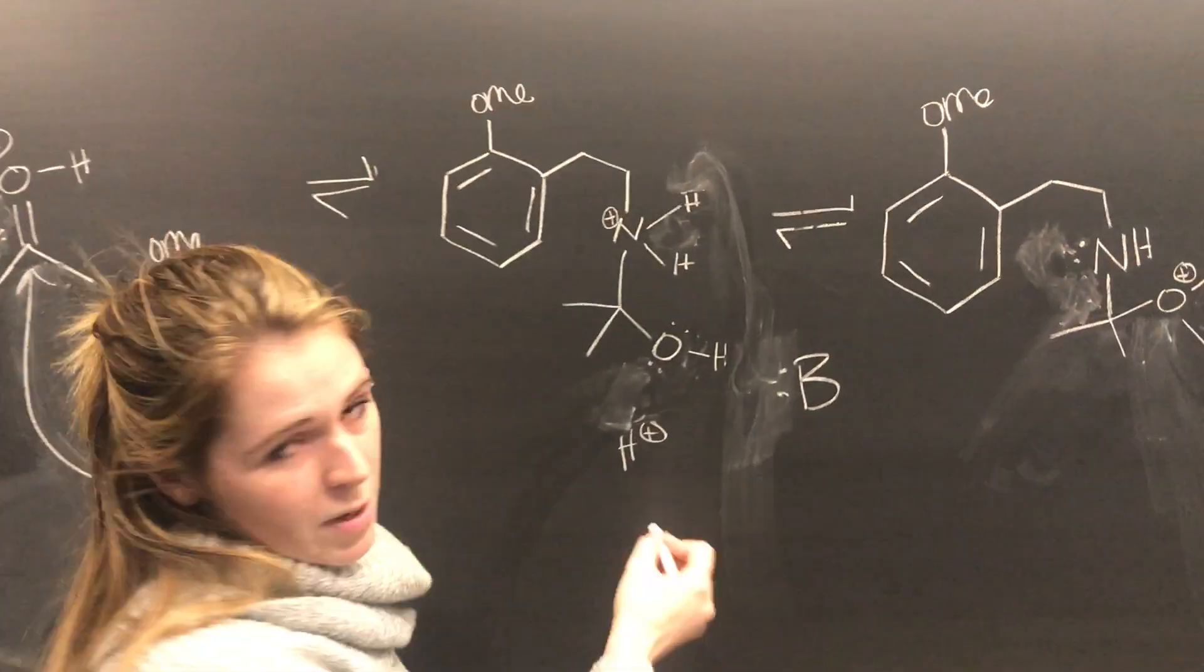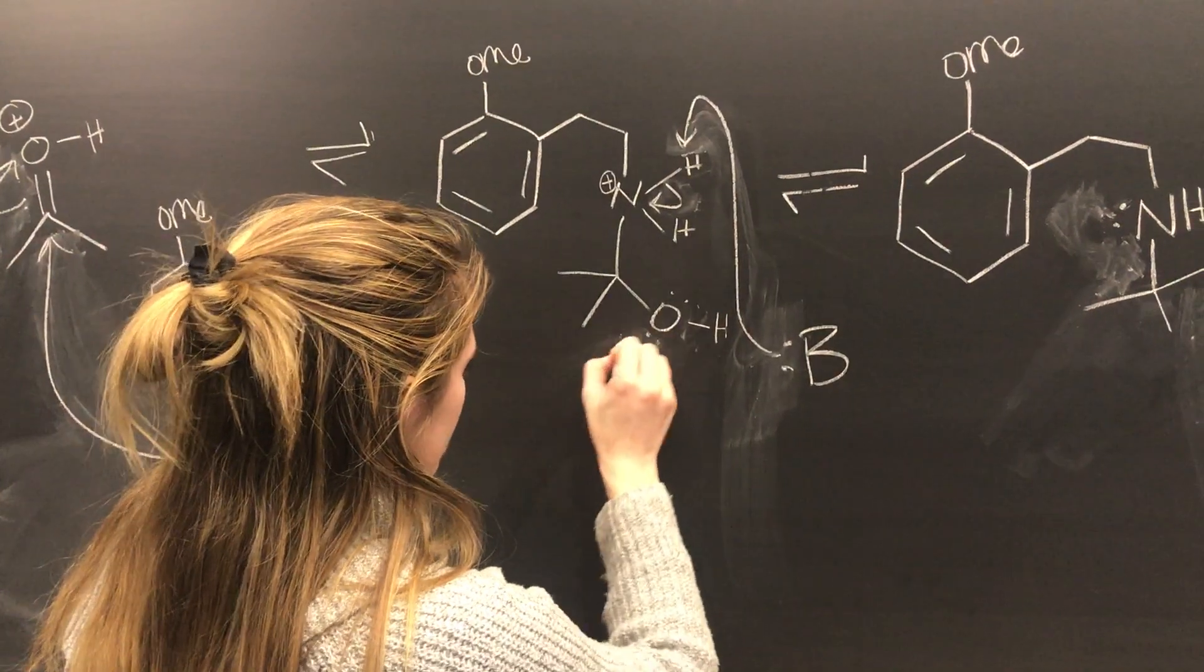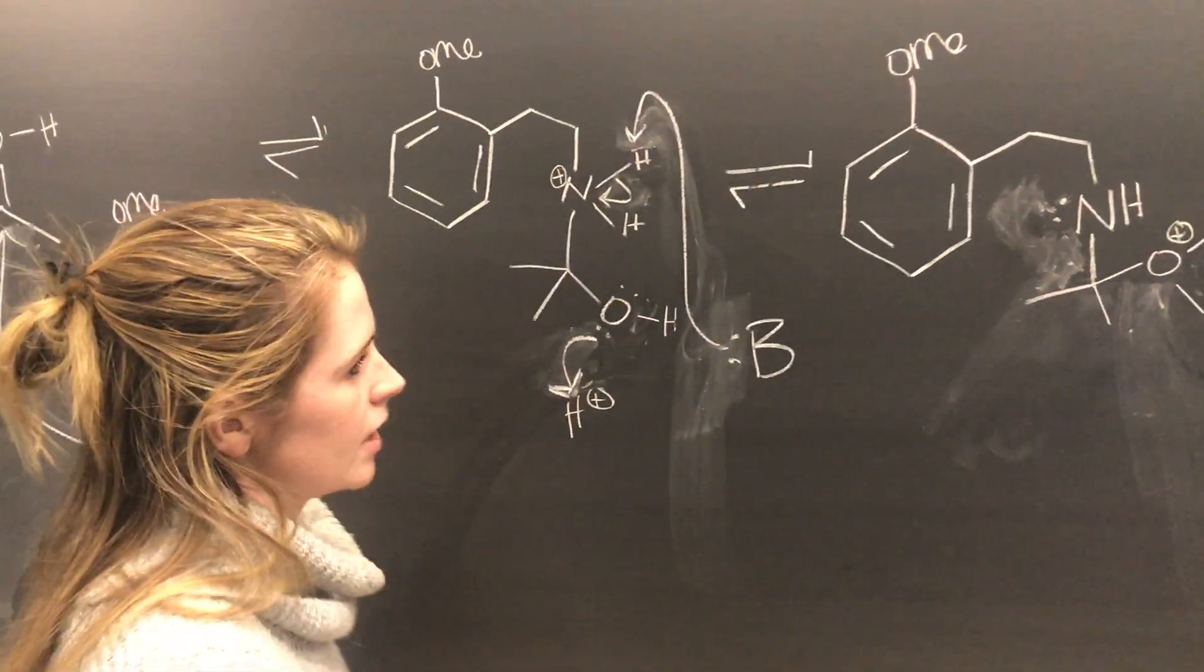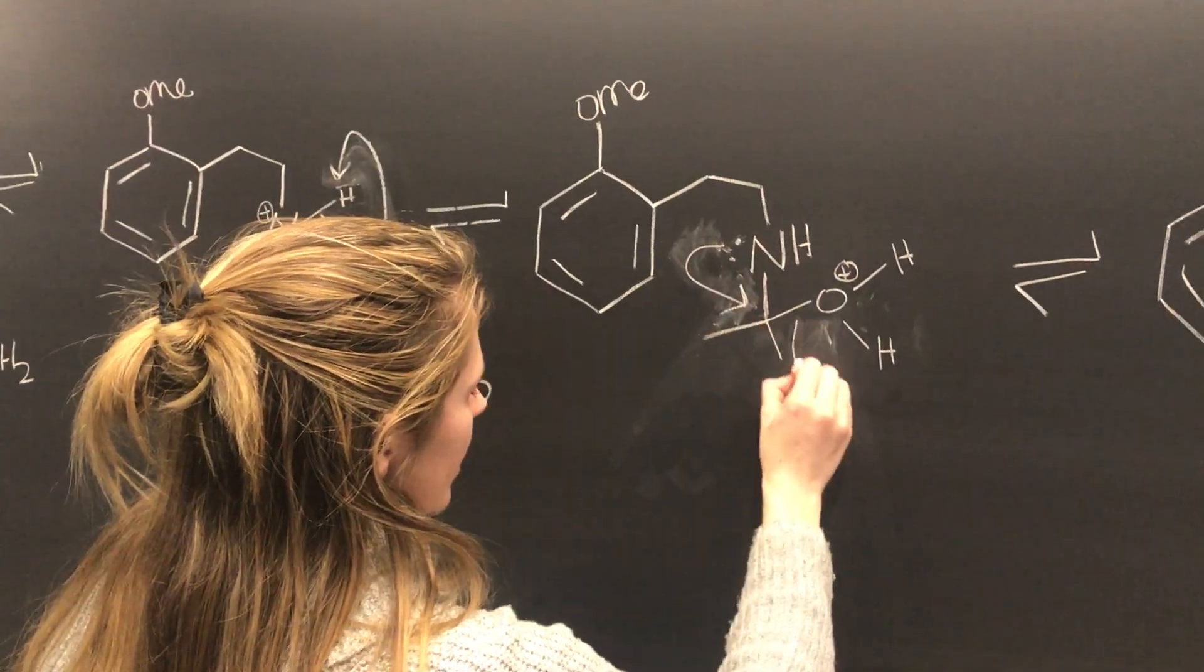Then a bit of a proton shuffle occurs, where the nitrogen gets deprotonated and the oxygen gets protonated to make it a good leaving group for these lone pairs to swing down and kick off that water.